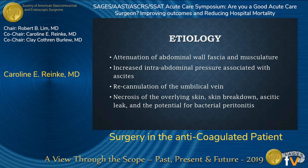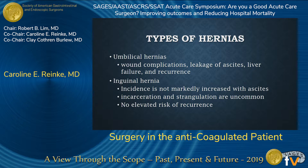There is increased pressure from the ascites, recannulation of the umbilical vein, and ultimately what we all fear: necrosis of the overlying skin causing skin breakdown, ascites leaks, and the potential for bacterial peritonitis. The two hernias most commonly seen are umbilical hernias and inguinal hernias. Umbilical hernias can cause real problems as previously mentioned. The inguinal hernia incidence is not markedly increased, and incarceration and strangulation are pretty rare.